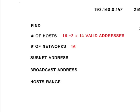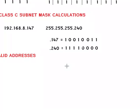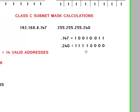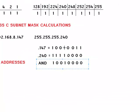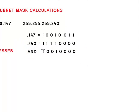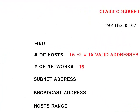Let me convert 147 into binary. When you have an AND operation the result is one only when you have two ones together. Every time you have a zero the outcome is going to be zero. So 1 and 1 gives you 1, 0 and 1 gives you 0, 0 and 1 gives you 0, 1 and 1 gives you 1, 0 makes 0 and so on. This is our result — our subnet address — which is 182.168.8.144.